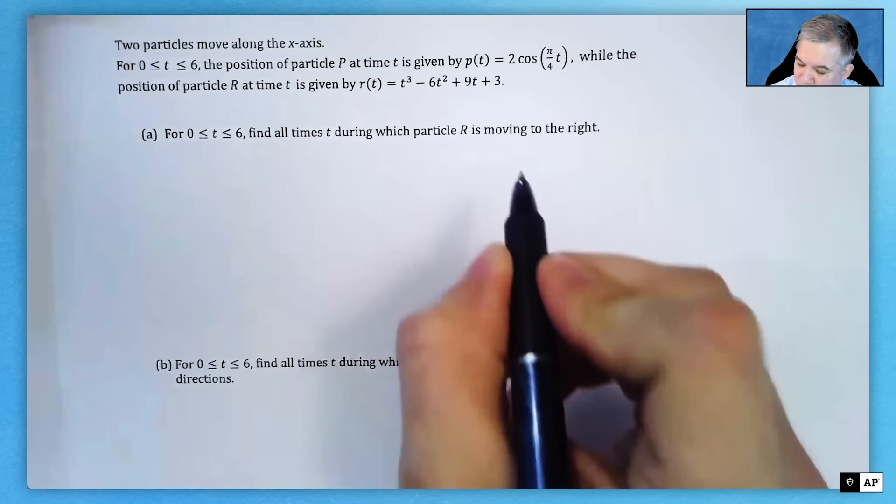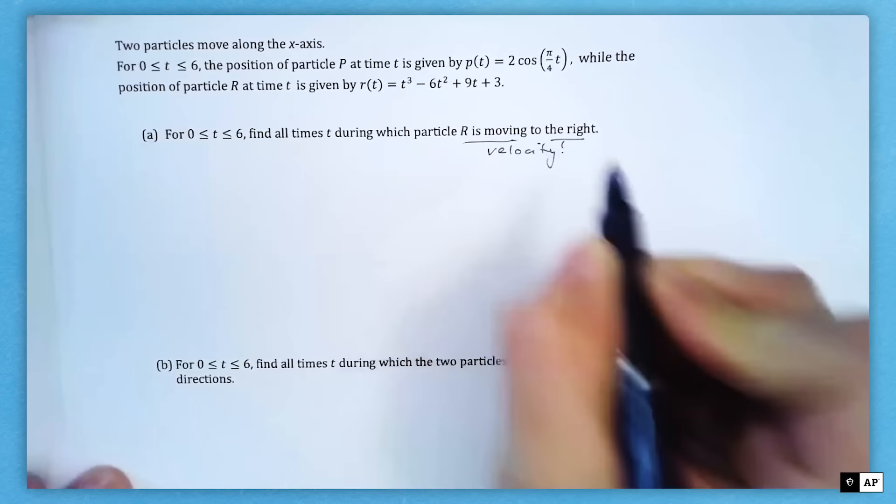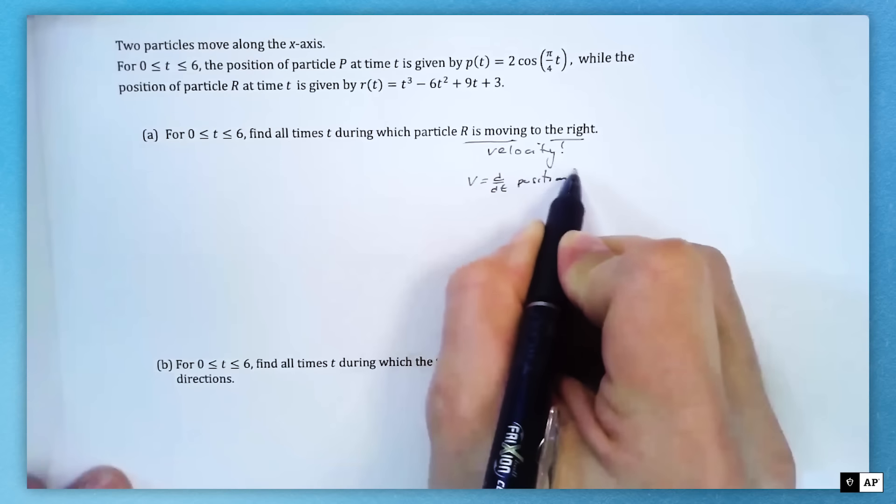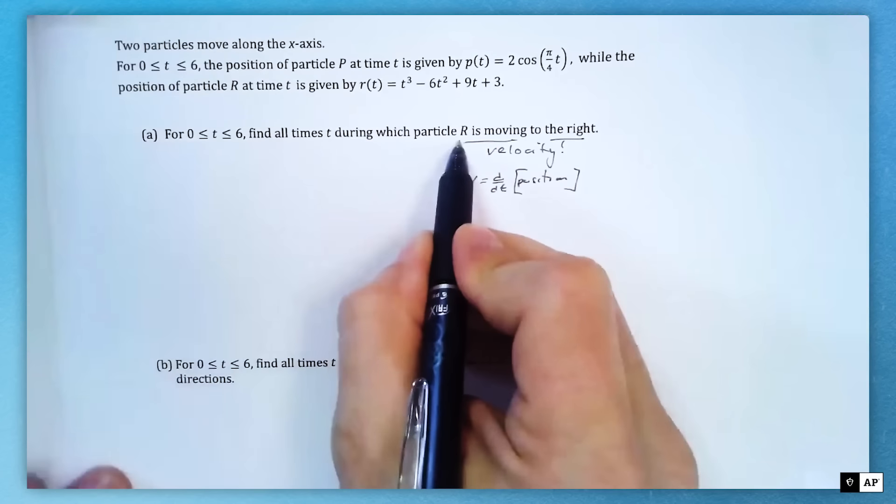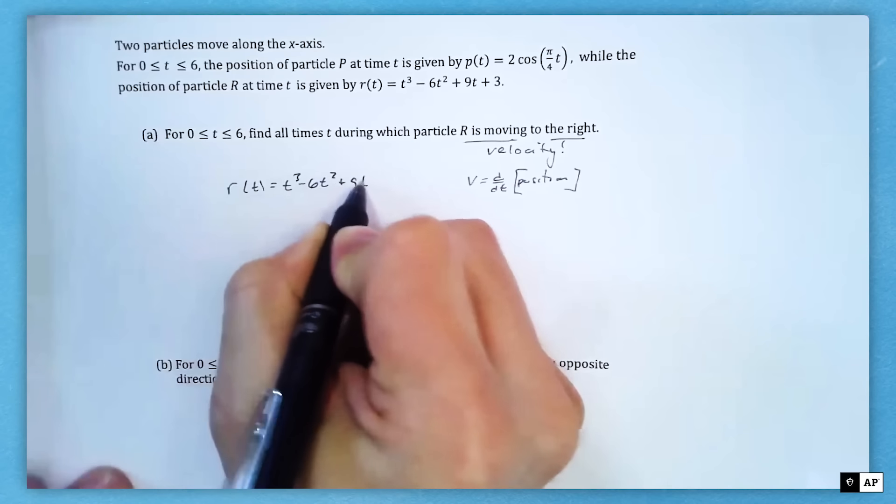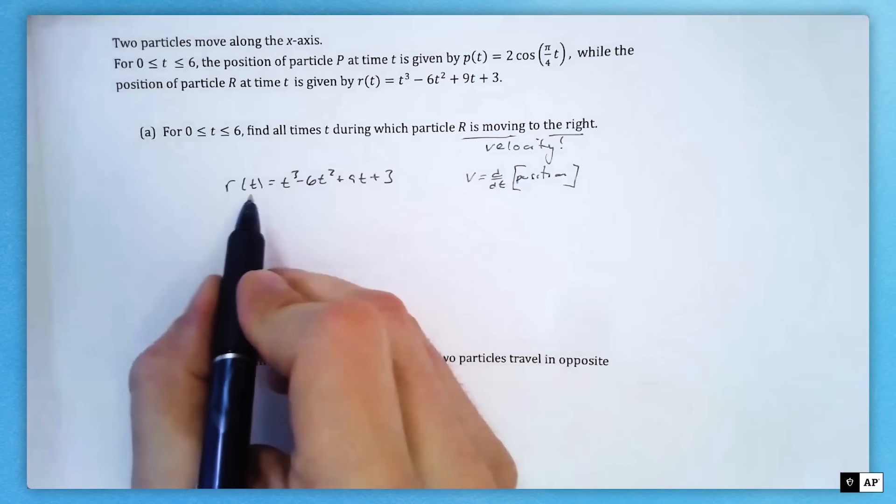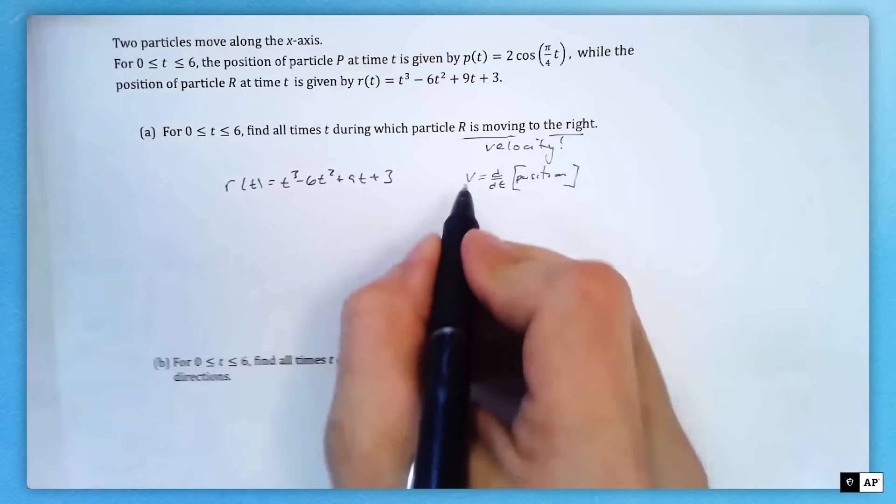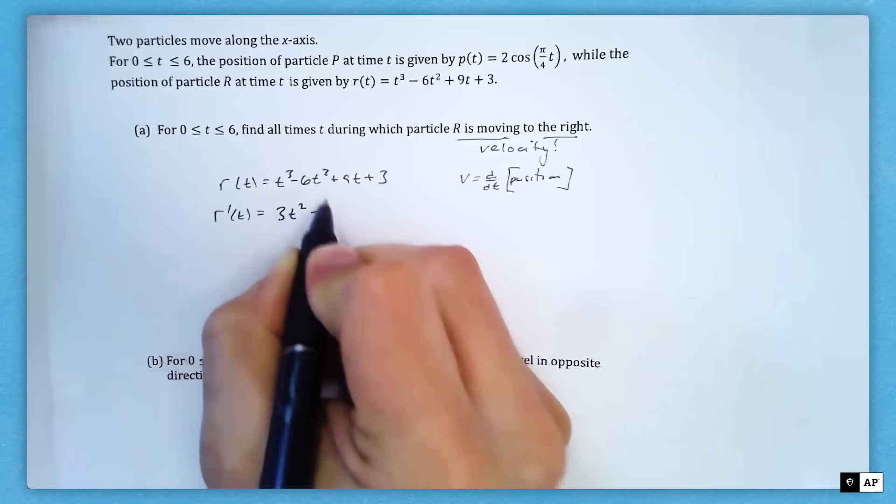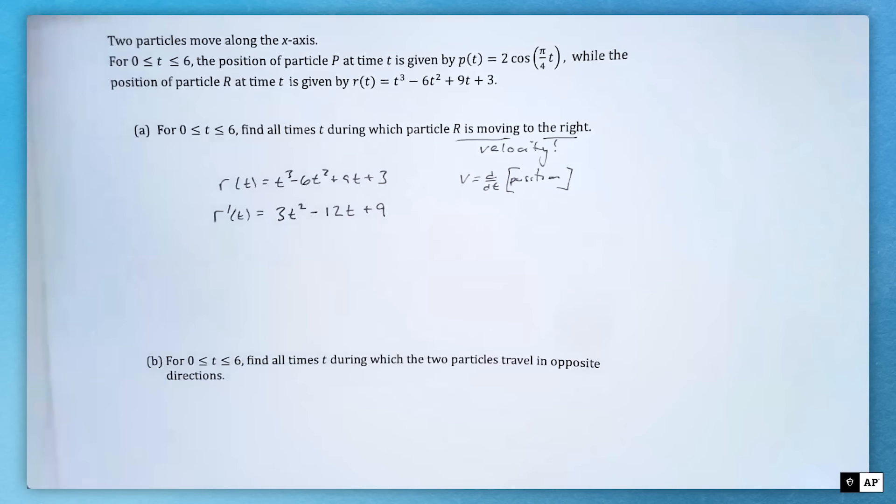Motion to the right speaks velocity to me, and velocity is the derivative of position. This is particle R, so I'm going to bring in my R(t). I like recopying my functions so I have what I'm working with. R(t) equals t³ minus 6t² and the rest of that polynomial. I'm looking for the derivative, so R'(t) equals 3t² minus 12t plus 9.